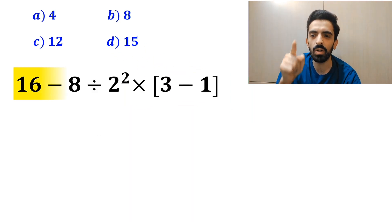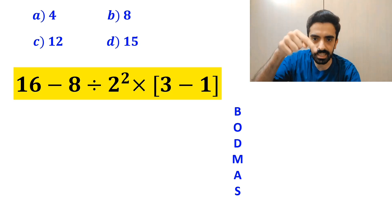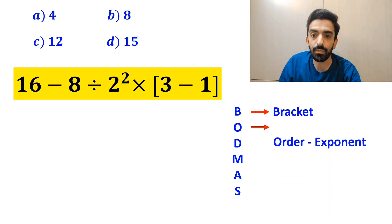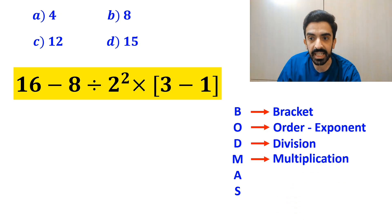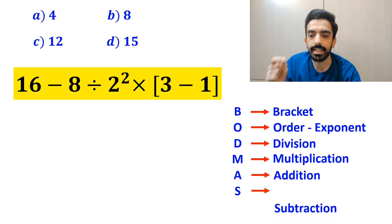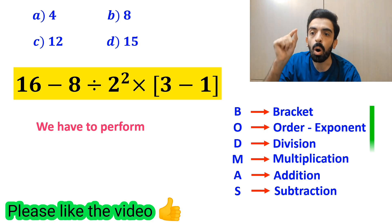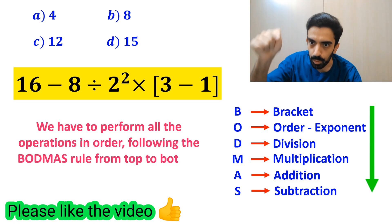Now let me show you how to solve this expression properly. To solve this problem, we must follow the BODMAS rule. In this rule, B stands for bracket, O stands for order or exponent, D stands for division, M stands for multiplication, A stands for addition, and S stands for subtraction. We have to perform all the operations in order following the BODMAS rule from top to bottom.